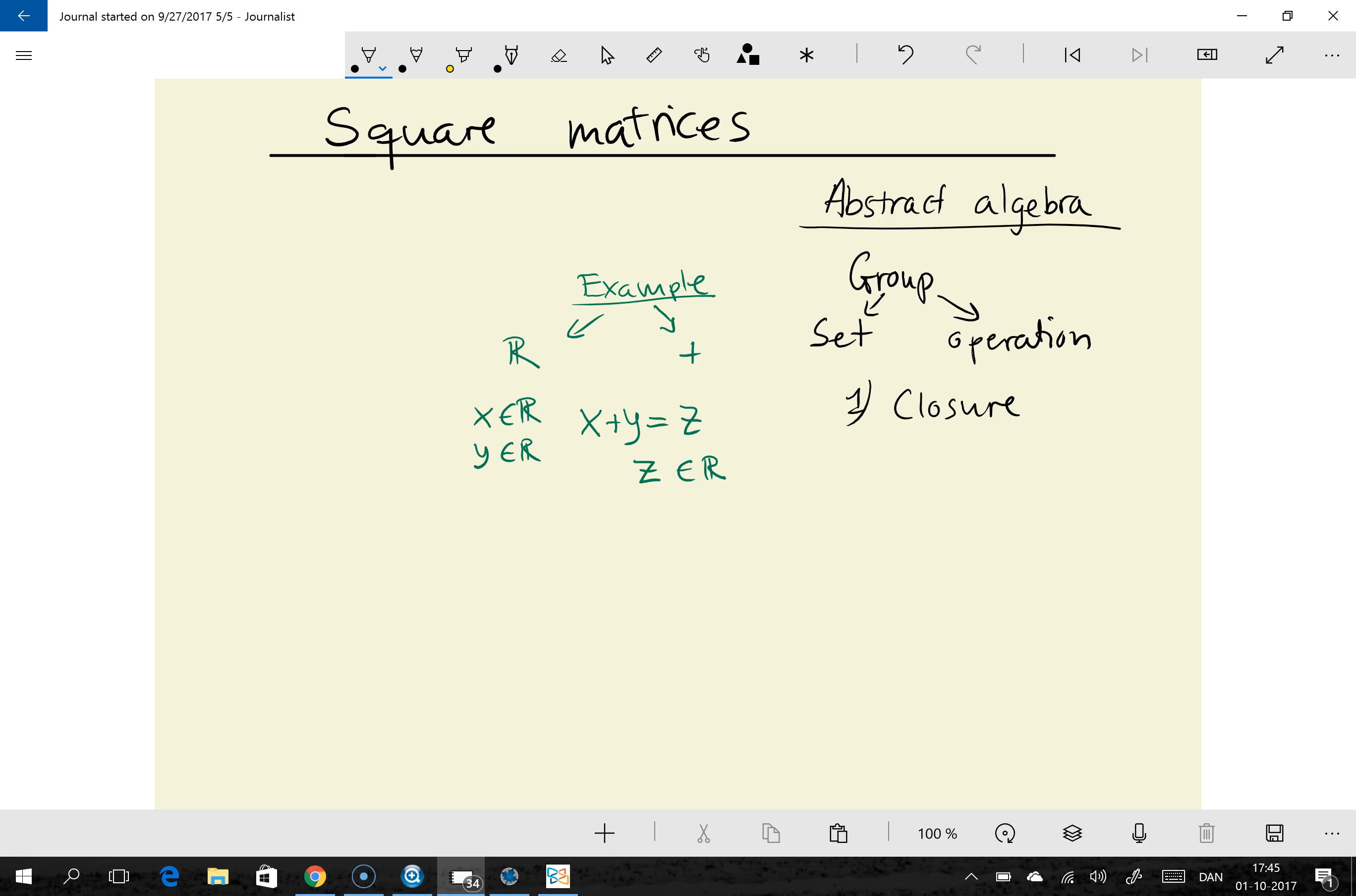The next requirement is the property of associativity. And associativity just means that if I apply the operation twice on three elements, it shouldn't matter whether I first add x and y and then z, or if I add y and z first and then add x. There should be no difference in the result. And of course, in case of the real numbers here, it's pretty obvious that it doesn't matter the order in which I add the numbers. So we can safely say that the real numbers can meet this requirement.